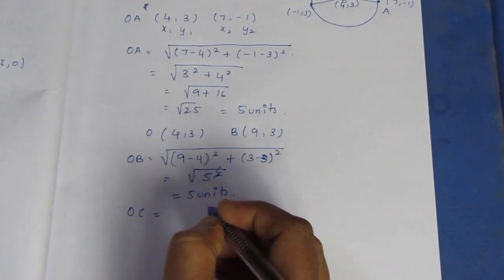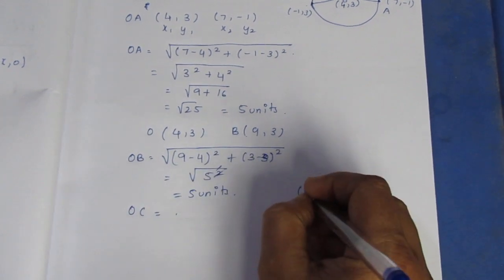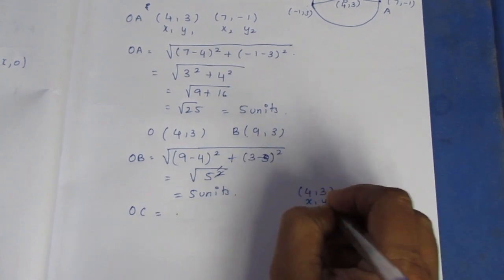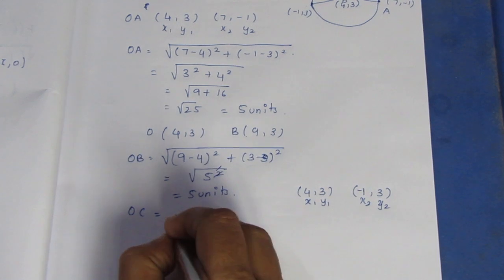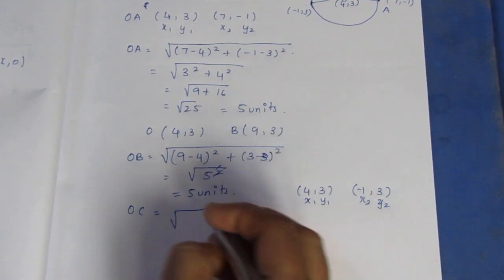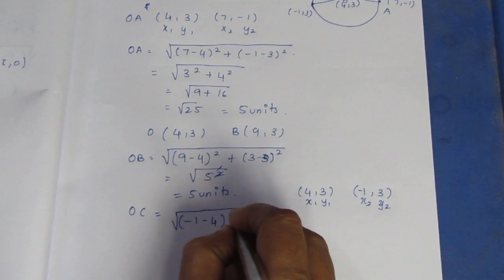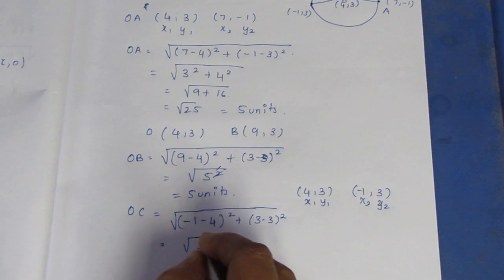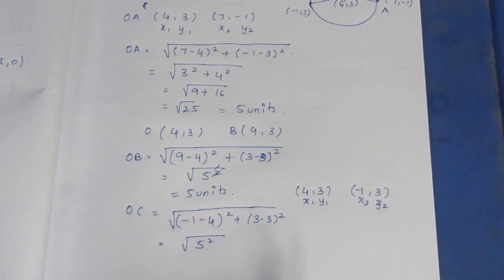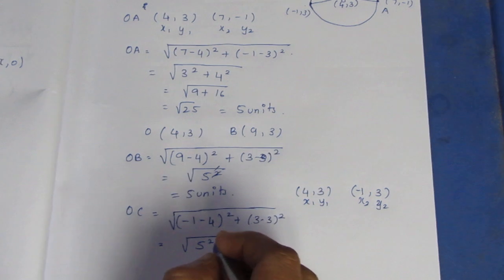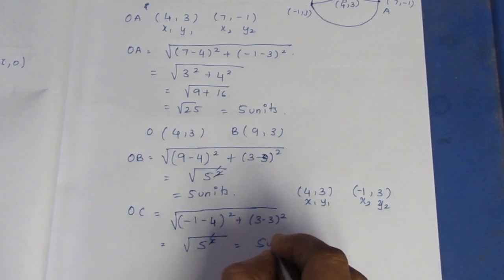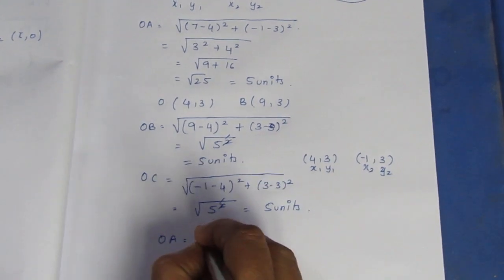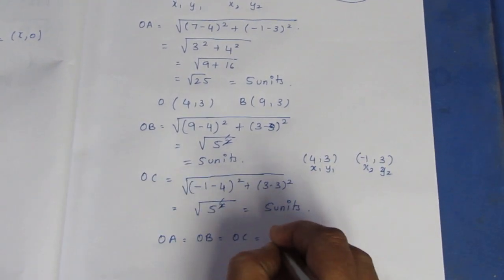OC: O is (4,3), C is (-1,3). This is (x1,y1) and (x2,y2). Root of (-1 minus 4) the whole square plus (3 minus 3) the whole square. That is (-5) the whole square, which is 25, plus 0. So root of 25 = 5 units.